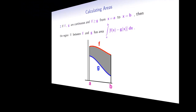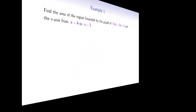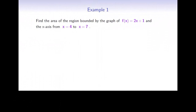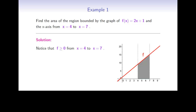Now let's look at the following example. Find the area of the region bounded by the graph of f(x) equals 2x plus 1 and the x-axis from x equals 4 to x equals 7. The graph of f is a straight line. Here's the graph and the region bounded between the graph and the x-axis from x equals 4 to x equals 7. Note that f is a positive function on that interval, and so the integral is expected to be positive and equal to the area of the gray region.